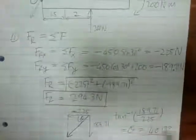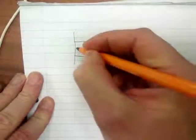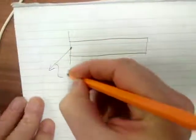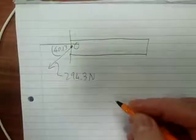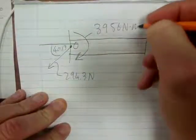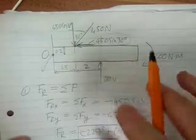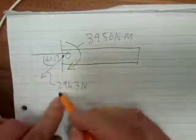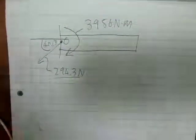So what are we meant to learn? That entire loading system can be replaced at point O with a force of 294.3 newtons at an angle of 40.13°, but we must also include a clockwise moment of 39.56 newton-meters. This original system of forces and couple moments — the effect it has at point O is to apply a force of 294.3 N at that angle, and a rotational effect which is a moment of 39.56 newton-meters. Hope this helps, cheers!